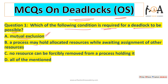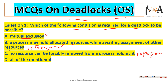The next condition is that a process may hold allocated resources while awaiting assignment of other resources — that is the hold and wait condition, which is also required for deadlock. The next one is no resource can be forcibly removed from a process holding it — that is the no preemption condition. So we require mutual exclusion, hold and wait, and no preemption in order to make a deadlock possible.